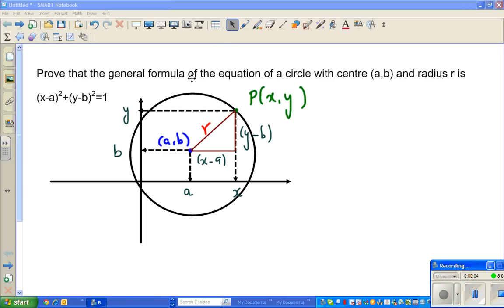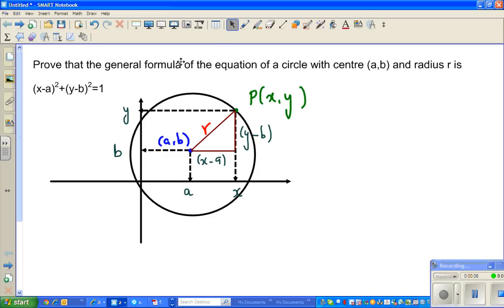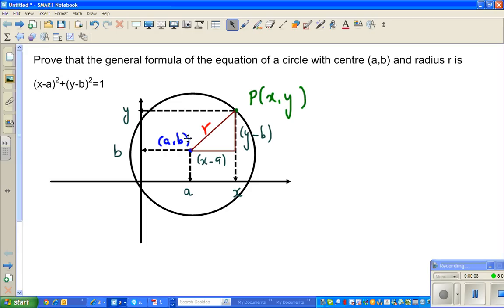Hello friends, in this video I'm going to prove the equation of a circle with center (a,b) and radius r is this formula: (x-a)² + (y-b)² = r². It's pretty simple.